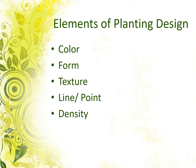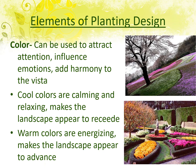Now we get into the language of planting design — those of you who've taken art classes or studied graphic design will recognize this terminology; it's the same concept but with different materials. The main ones we'll talk about are color, form, texture, line, and density. Color is used to attract attention, influence emotion, and add harmony to a scene. Cool colors are calming and make the landscape appear to recede, making a space look bigger, while warm colors are energizing and make the landscape appear to advance closer into your view.